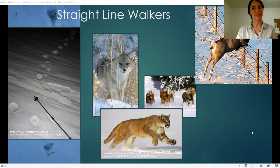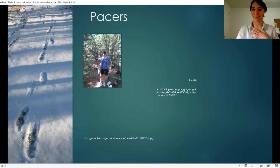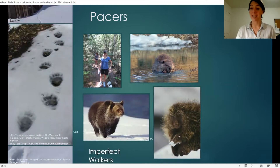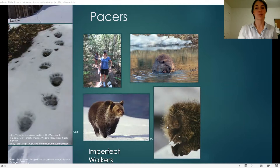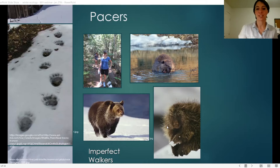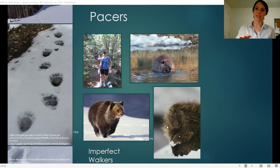That brings us to our next type: pacers, also known as imperfect walkers — these are waddlers. Pacers include beavers, porcupines, and bears. They shift all their weight to the right and then all of their weight back to the left, because both the left back and front foot move forward together, then the right limbs move together. If you watch these quadrupedal creatures, you can see that weight shift clearly.